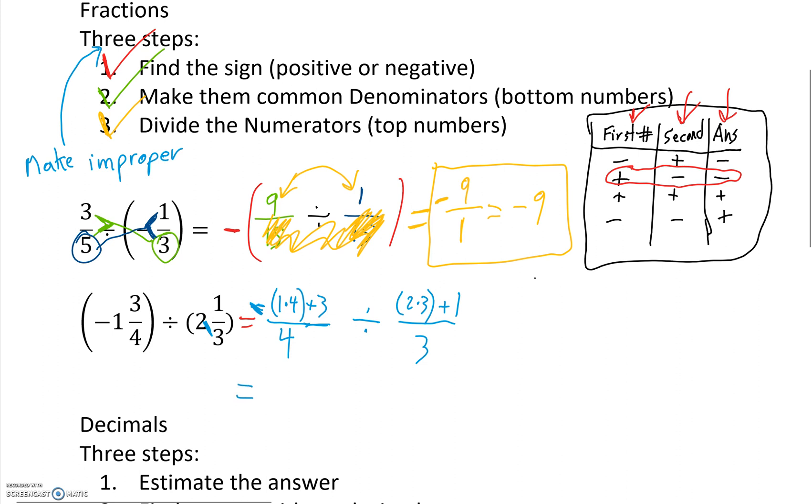So we're going to have 4 times 1 plus 3 is 7 over 4. Don't forget the negative in front. Divided by 2 times 3 is 6 plus 1 is 7 over 3. Okay? Now we have improper fractions. Now we can do the same steps as before.